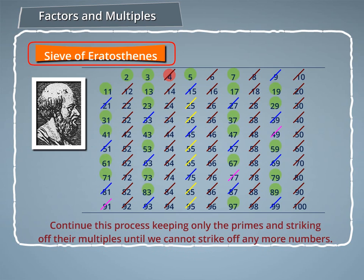Step 5: Continue this process, keeping only the primes and striking off their multiples until we cannot strike off any more numbers.